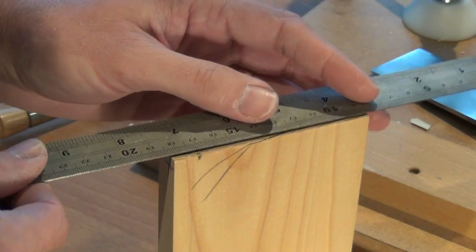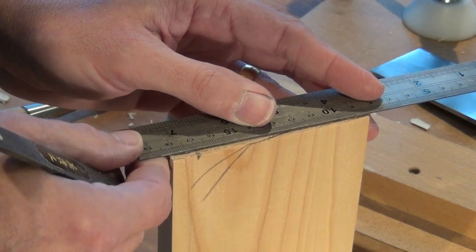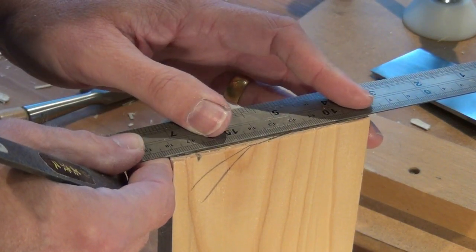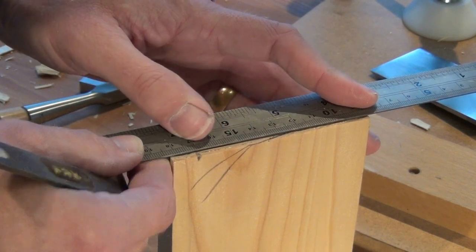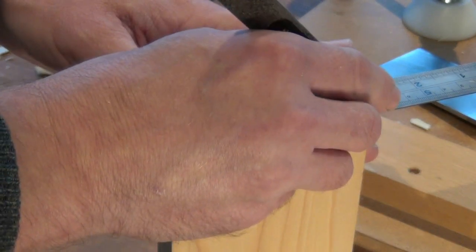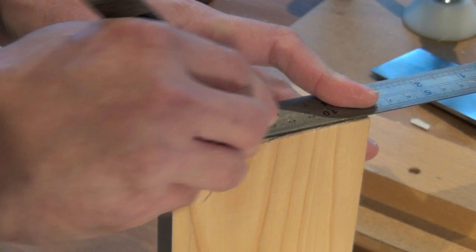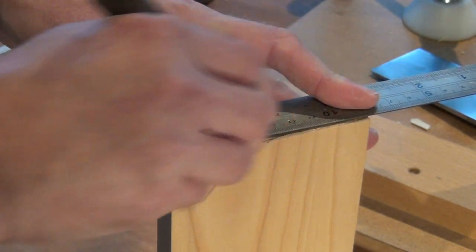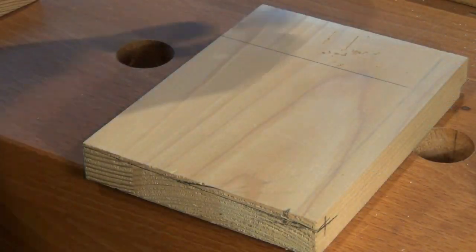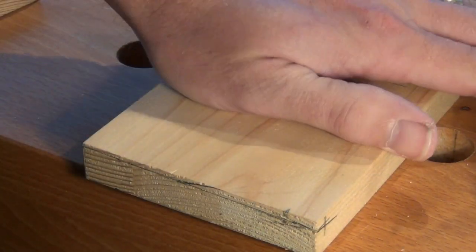I'll score it in with a knife. I always like to leave a little more material on there and we can take a little bit extra out to fit the joint. Use the marking gauge to put in a shoulder line.